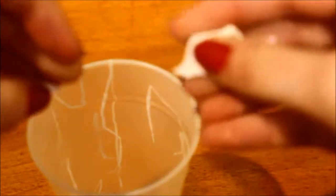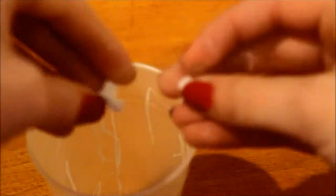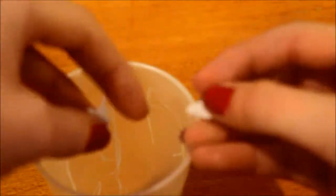Next I make the frosting using liquid clay, which you can find at a craft store. I just mix the TLS, the translucent liquid sculpey, with some little pieces of white clay and stir it really well until it's a frosting consistency.